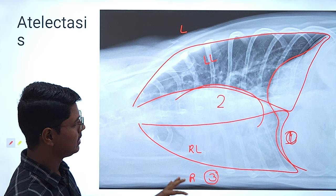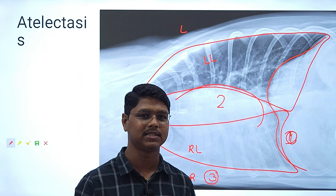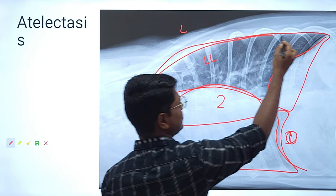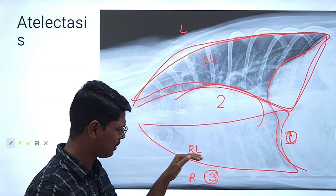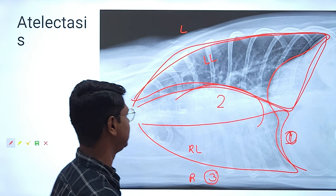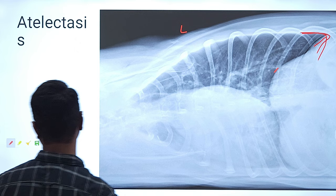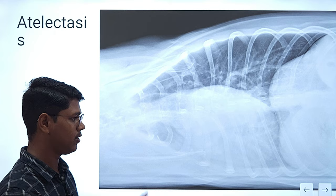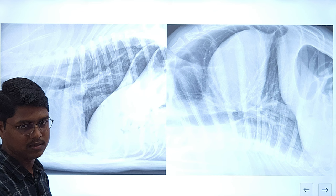This is why you should be very careful while interpreting the thoracic radiograph. If you are evaluating a right lateral recumbency radiograph, you are basically evaluating the left lung. If you want to evaluate the right lung, you have to take the left lateral recumbency. You now understand the phenomenon of atelectasis.